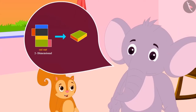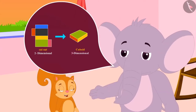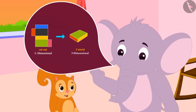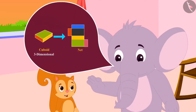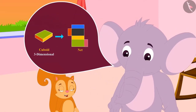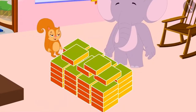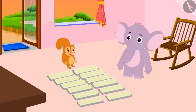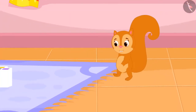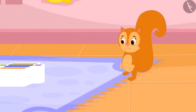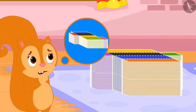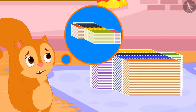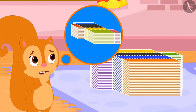Appu also explained to Chanda about the cuboid and its net. Chanda and Appu packed all the laddus. Now Appu wants to pack cashew cutli. Chanda now saw cutouts of cashew cutli boxes, which look different from the cutouts of laddus boxes.